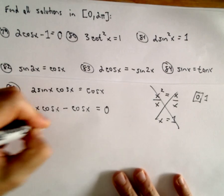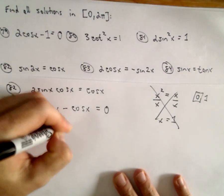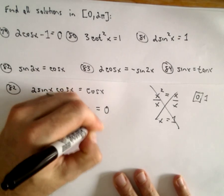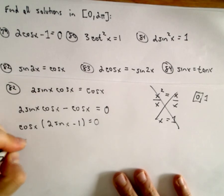So notice we can factor out a cosine of x. We would be left with 2 sine x minus 1 equals 0. Well, one of the solutions is when cosine of x equals 0.